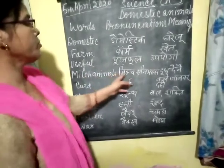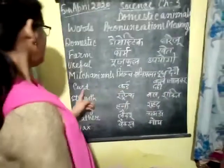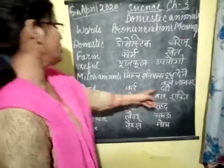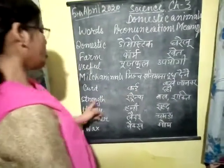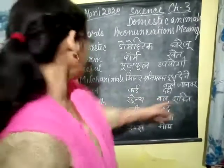Milch Animals means Doodh Deenewaale Januar. Curd means Dahi. Strength means Bulg or Shakti.